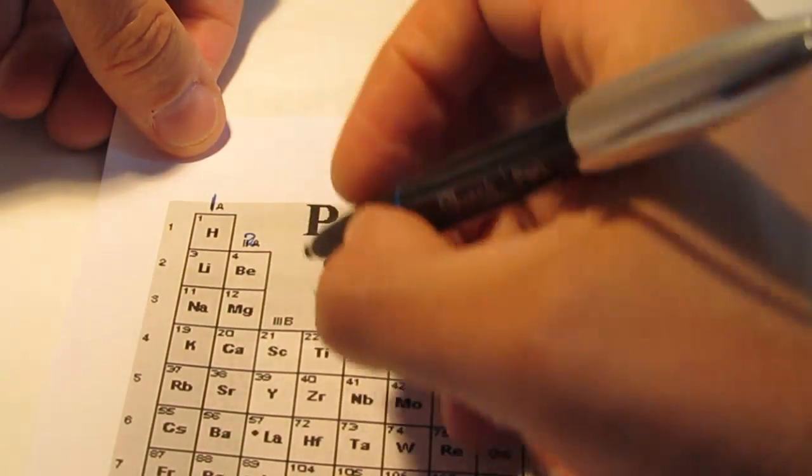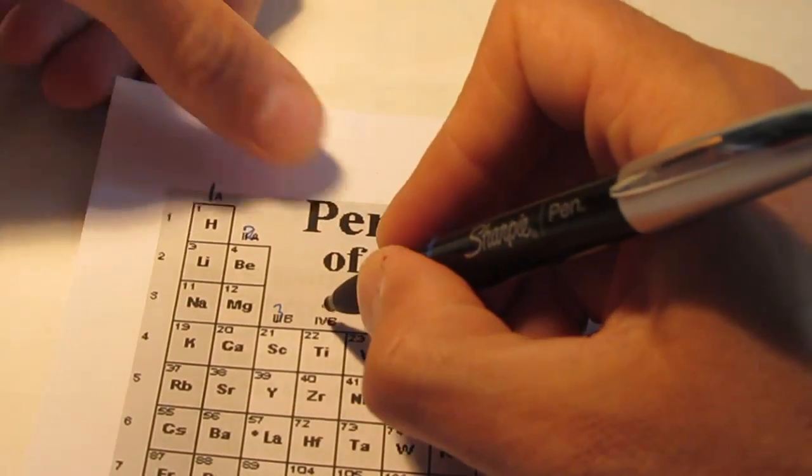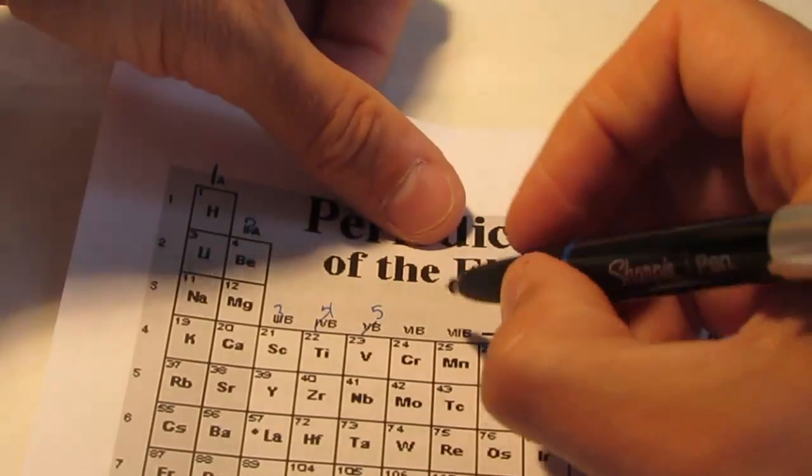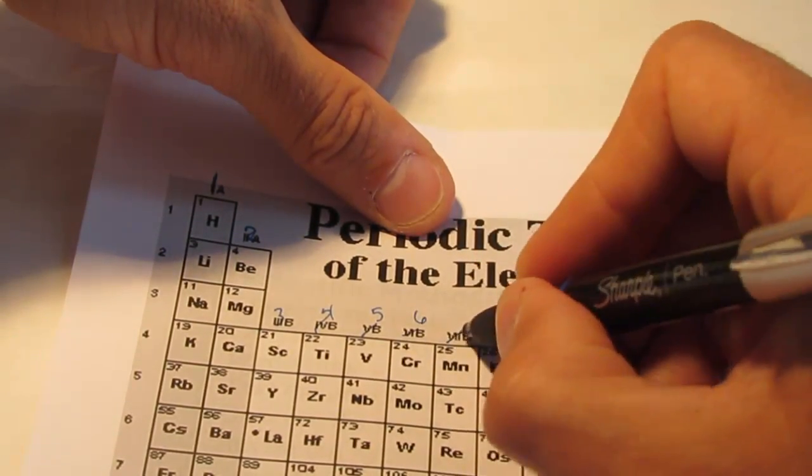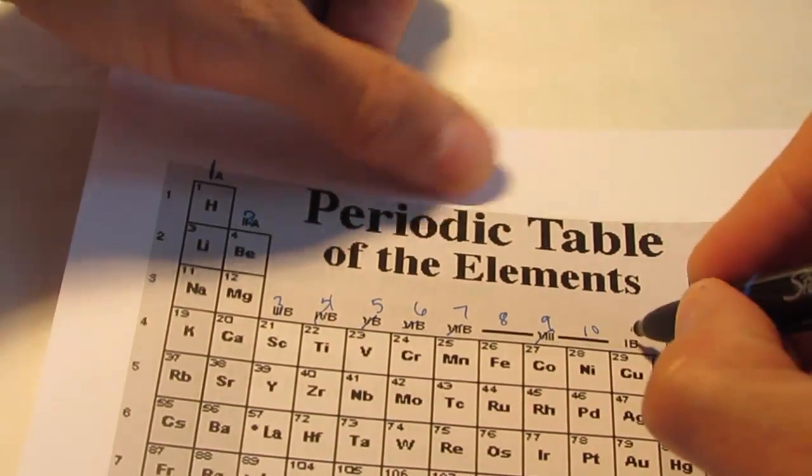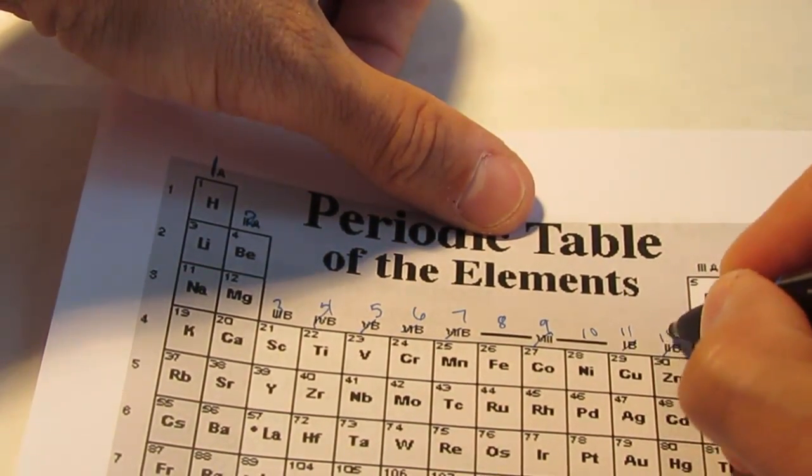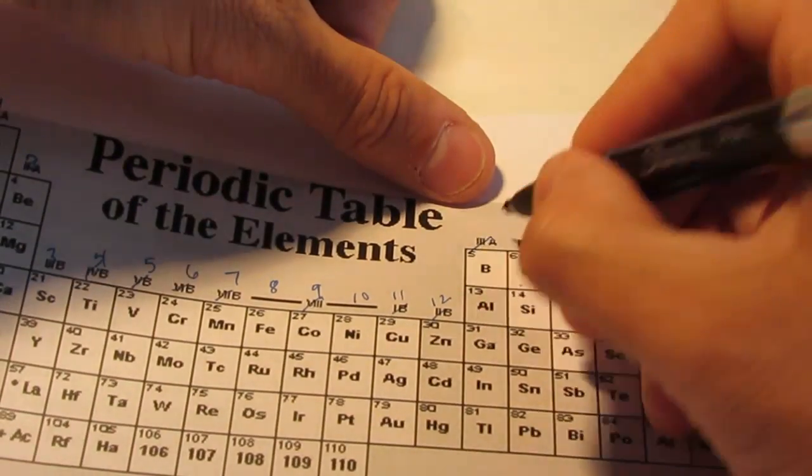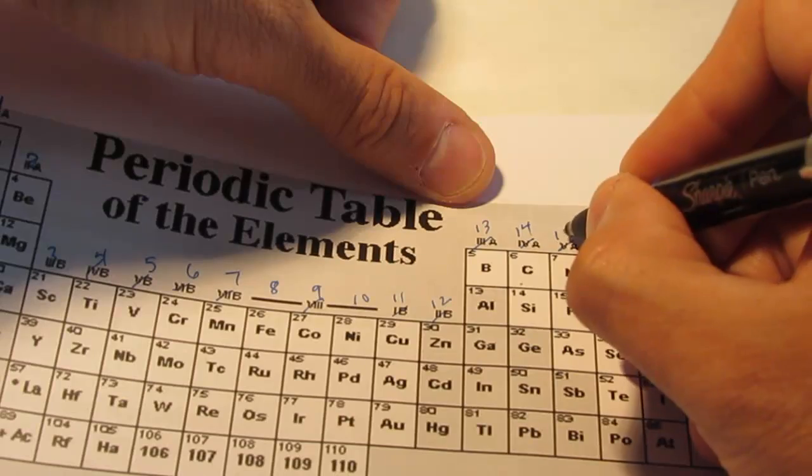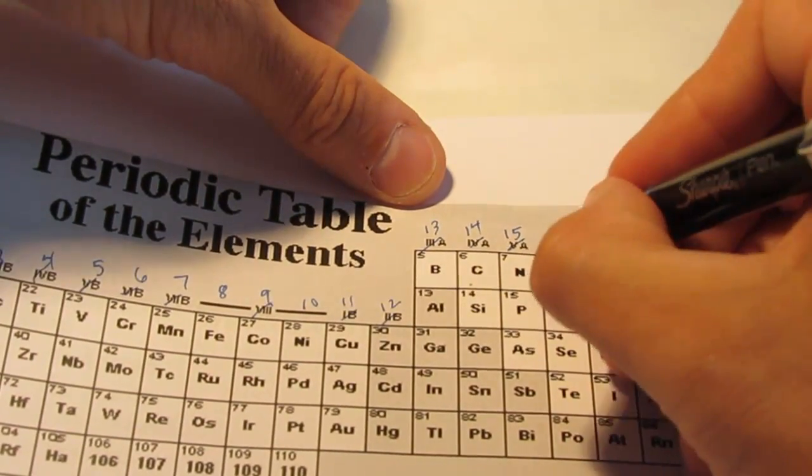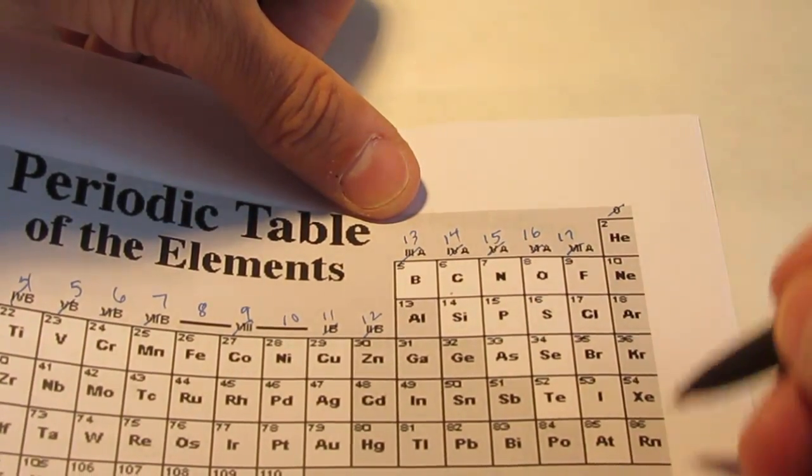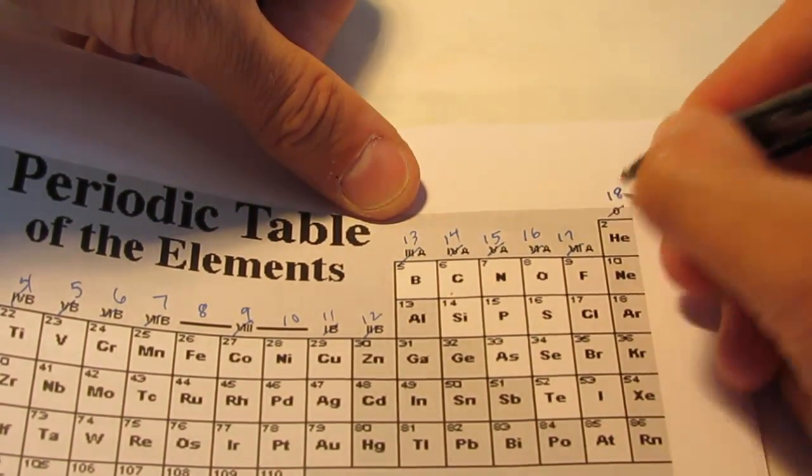And do you remember how many there are? They are numbered from 1 to 18. The numbering system on this periodic table is a bit outdated. The modern numbering system is group 1, then group 2, then we have groups 3 through 12, then groups 13, 14, 15, 16, 17, and the last group on the periodic table is group 18.